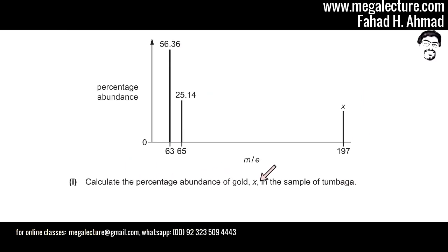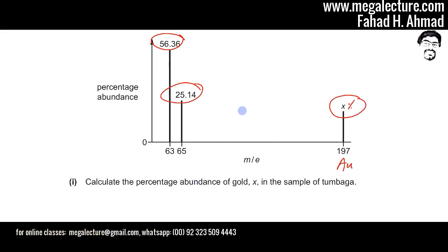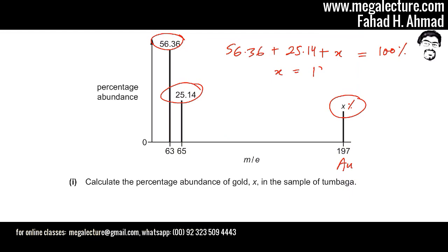We need to calculate the percentage abundance of gold X in the sample of tumbaga. The substance with a mass of 197 is gold. All elements in tumbaga must add up to 100%, so: 56.36 + 25.14 + X = 100%. Solving for X gives 18.5%. Therefore, tumbaga contains 18.5% gold.